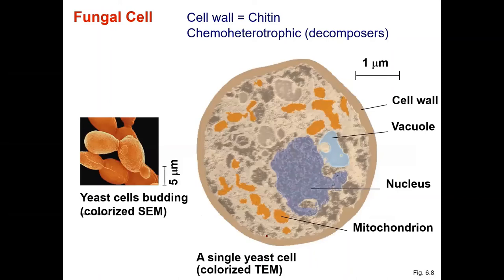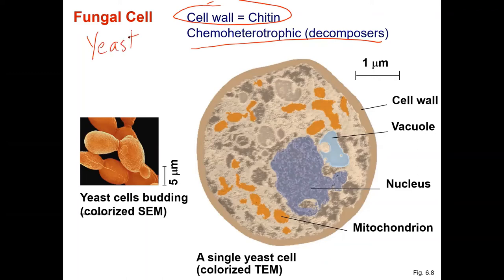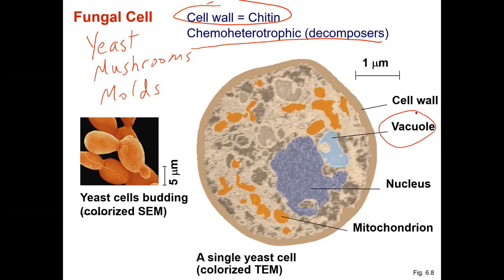Fungal cells have a cell wall made of chitin, and they're chemoheterotrophs just like us — they eat stuff, mostly as decomposers, though some are pathogenic like athlete's foot. There are different kinds of fungi: yeast are unicellular fungi, mushrooms are large reproductive structures of fungi that live underground, and molds are fuzzy structures with finger-like projections. In fungal cell diagrams you can see a nucleus, a central vacuole that can be quite large, and mitochondria colored orange or red.